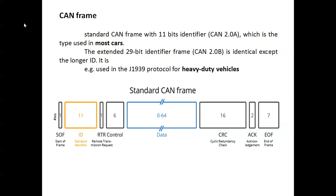Looking at the standard CAN frame, here we have the 11-bit identifier frame. The first bit is the Start of Frame, followed by the 11-bit standard identifier, 1-bit RTR, and 6-bit control field.